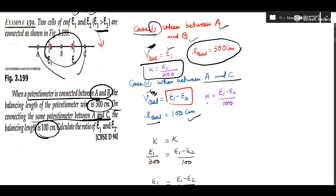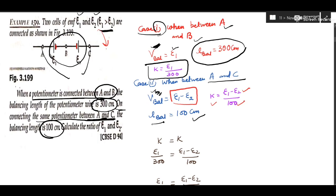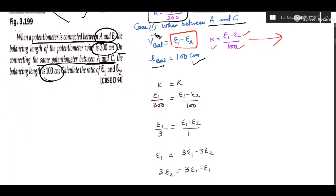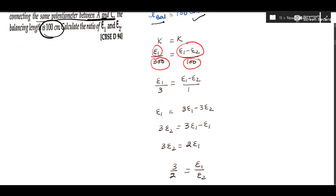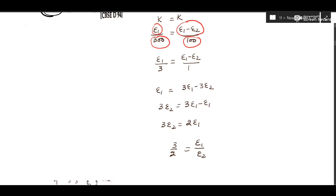From case 2, K = (E1 − E2) / 100. Now two values of K are available. Equate them: E1/300 = (E1 − E2)/100. Do cross multiplication and you can find out the ratio E1/E2, which is the answer to the question.